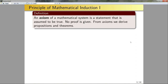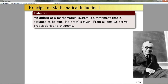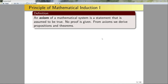From axioms we then derive propositions and theorems. The propositions and theorems that we prove are true if and only if the axioms we assumed to be true hold — that's one of the limitations in mathematics. Additionally, you can prove that there are statements in mathematics that you cannot prove. Okay, so now that we know roughly what an axiom is, let's introduce one.